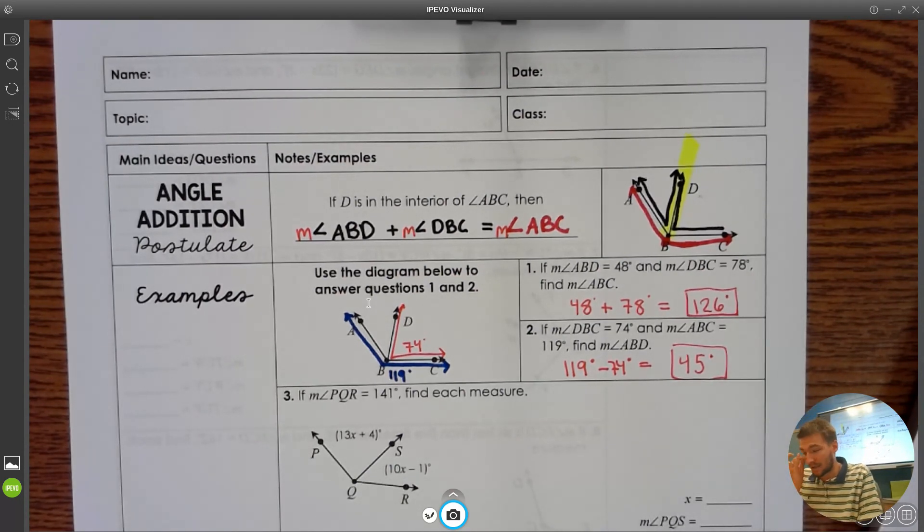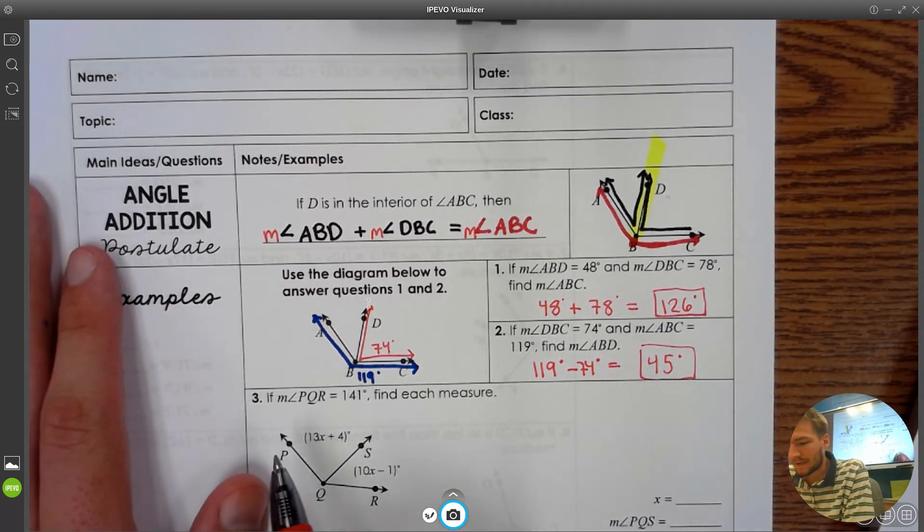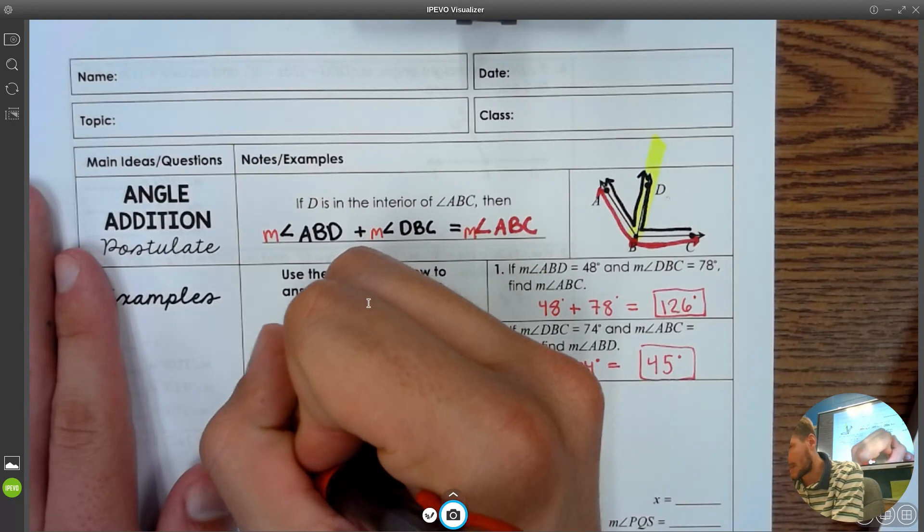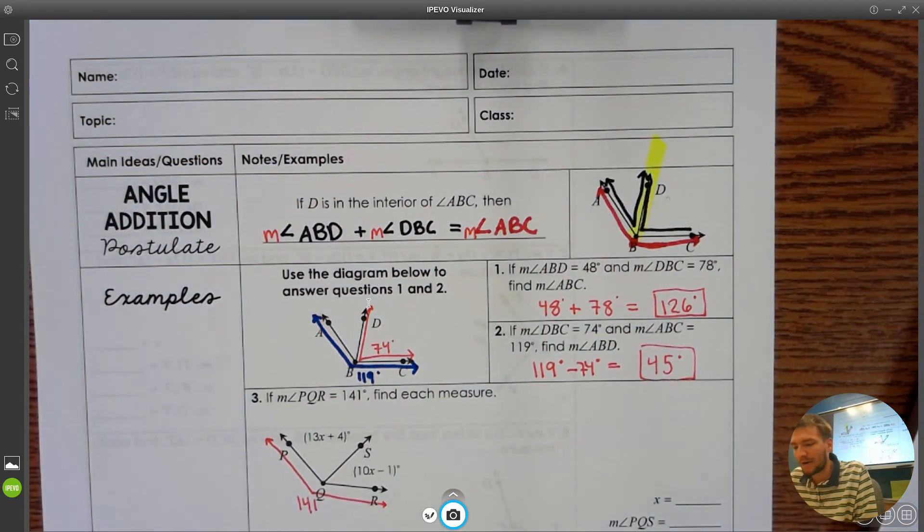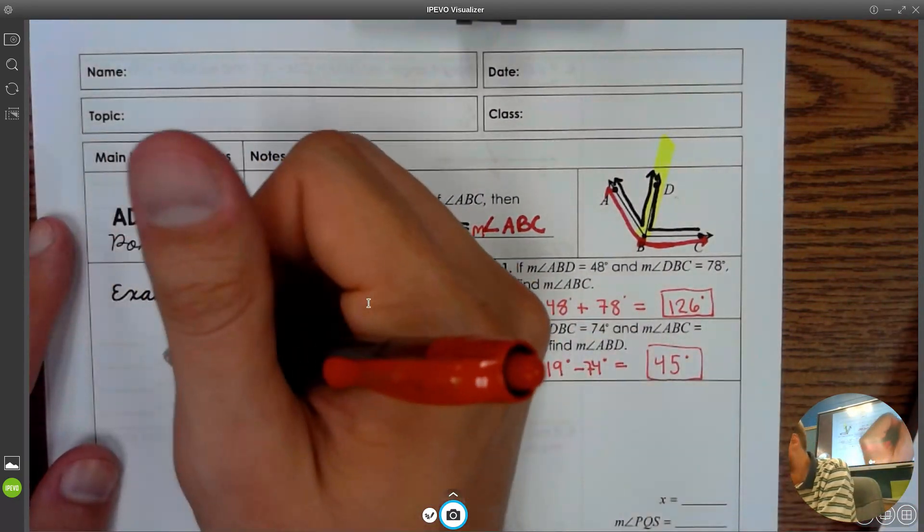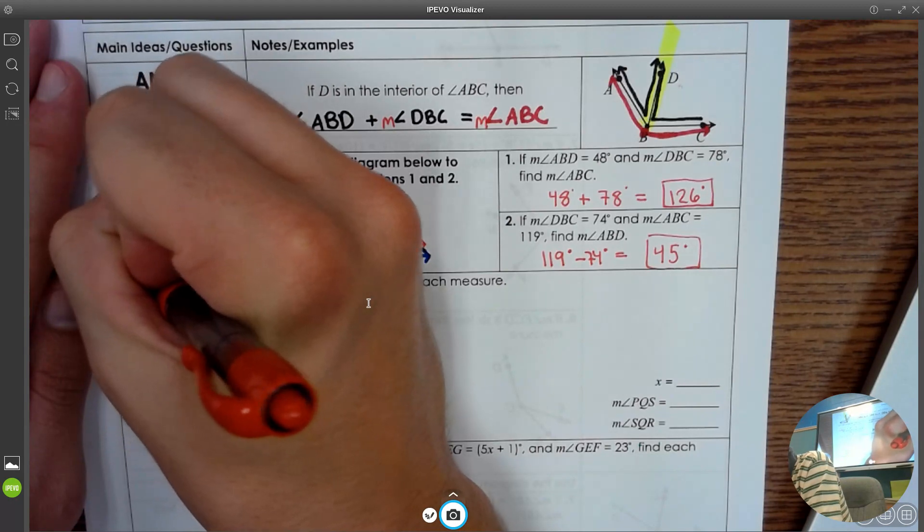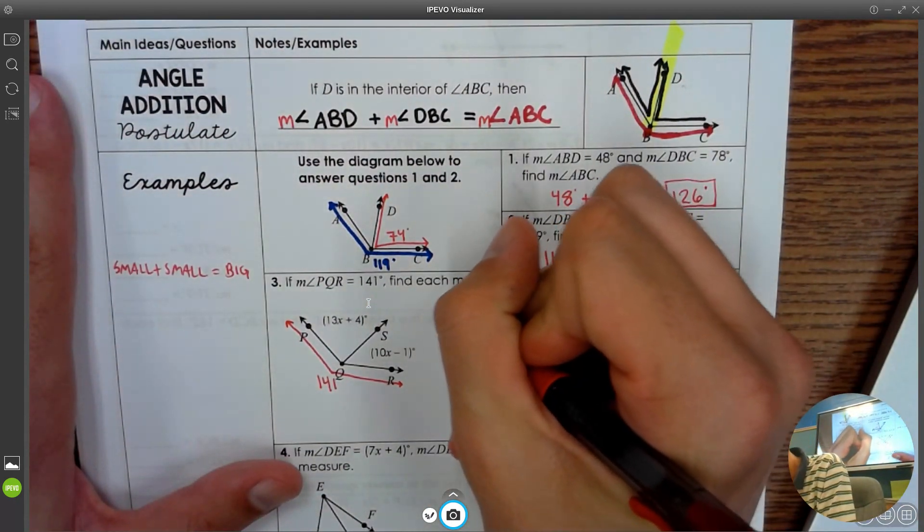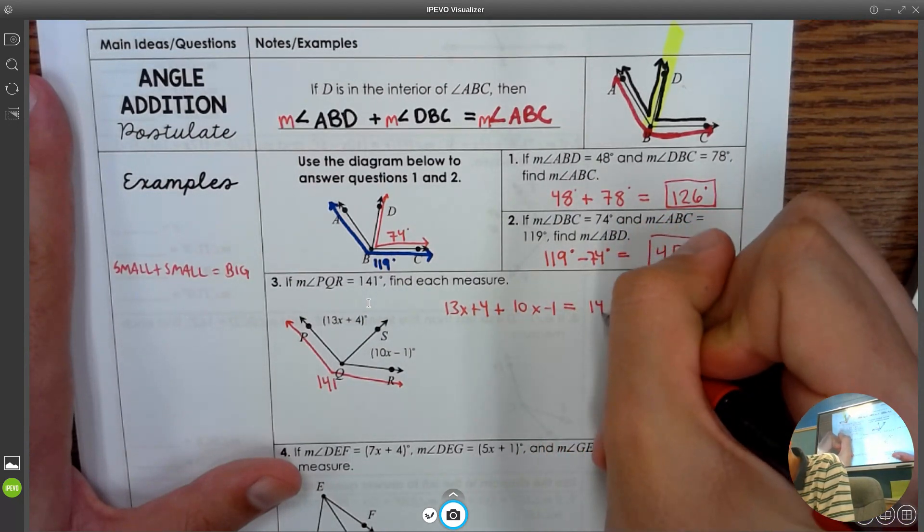Now for number three, we know the measure of PQR is 141. PQR, that is the measure of the entire thing, which is 141. How can we set up an equation here to help us find for X? Well, we know that the angle addition postulate says that small plus small equals big. So let's make a little equation here. The small one, 13x plus 4, added together with the other small one, 10x minus 1, should be equal to the big angle, which is 141.